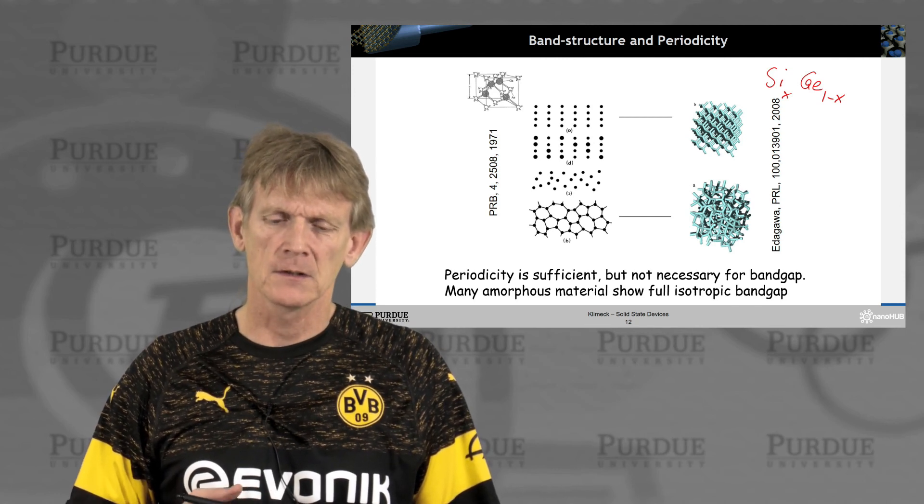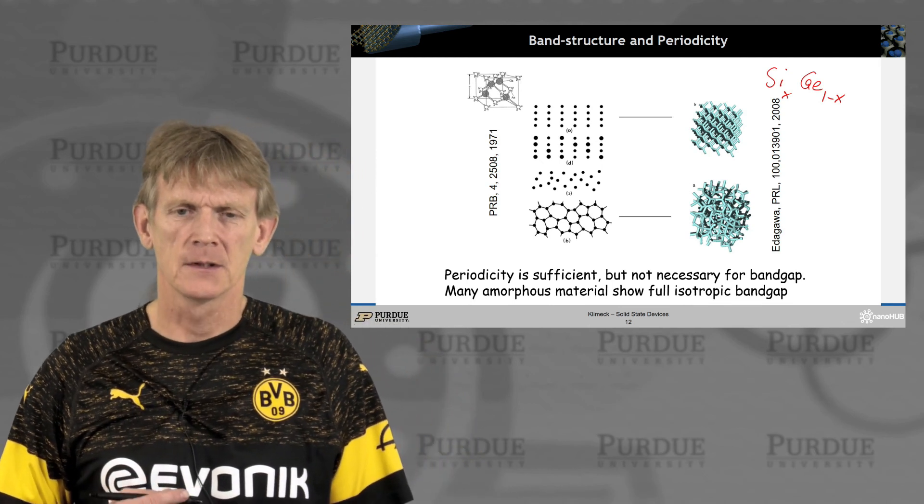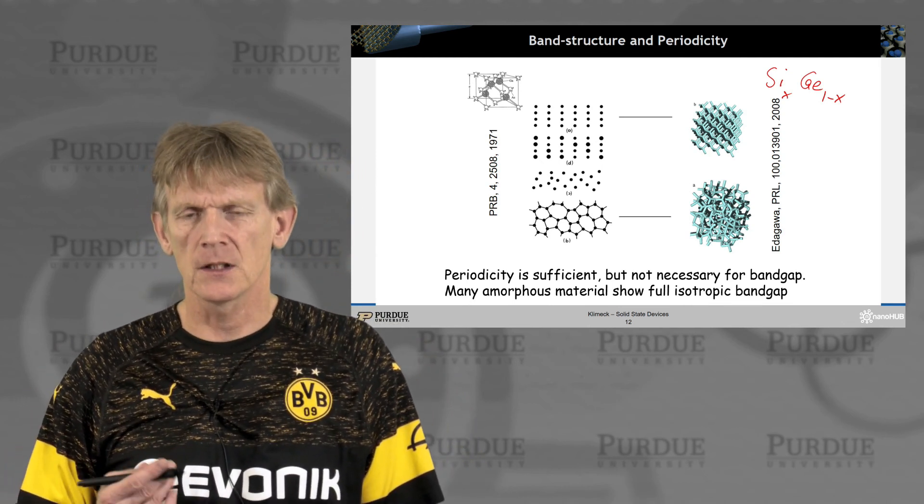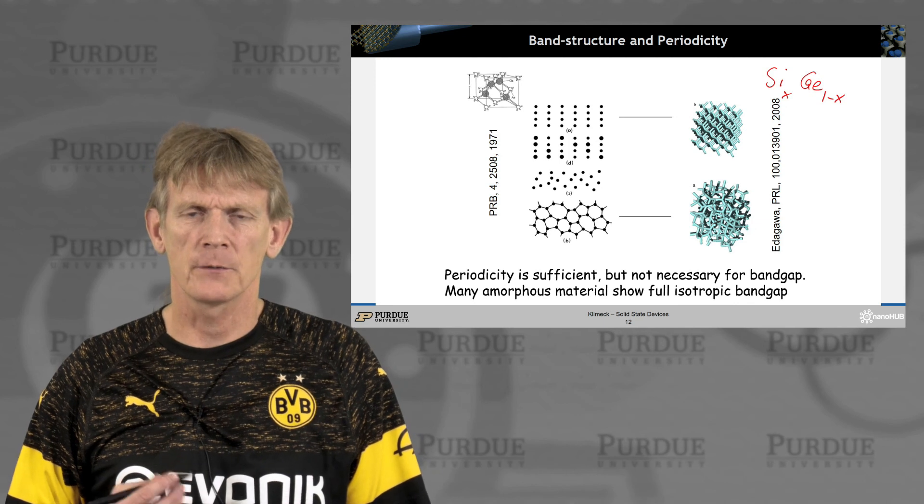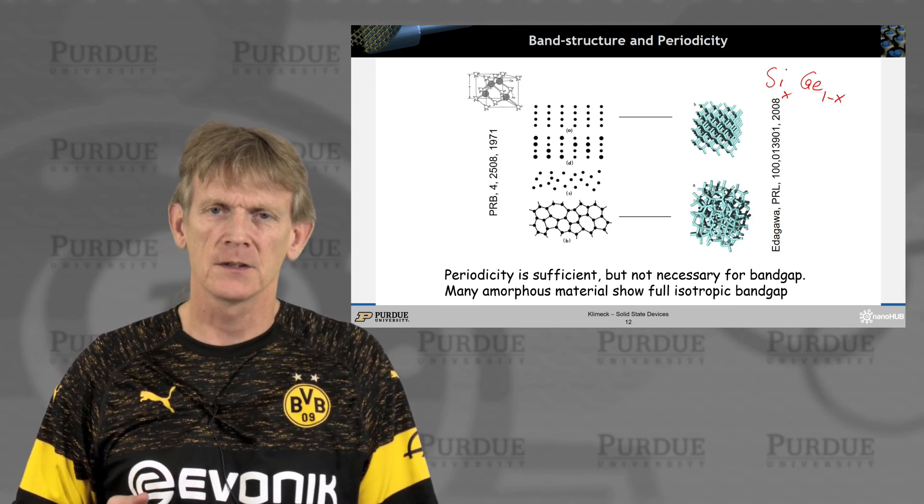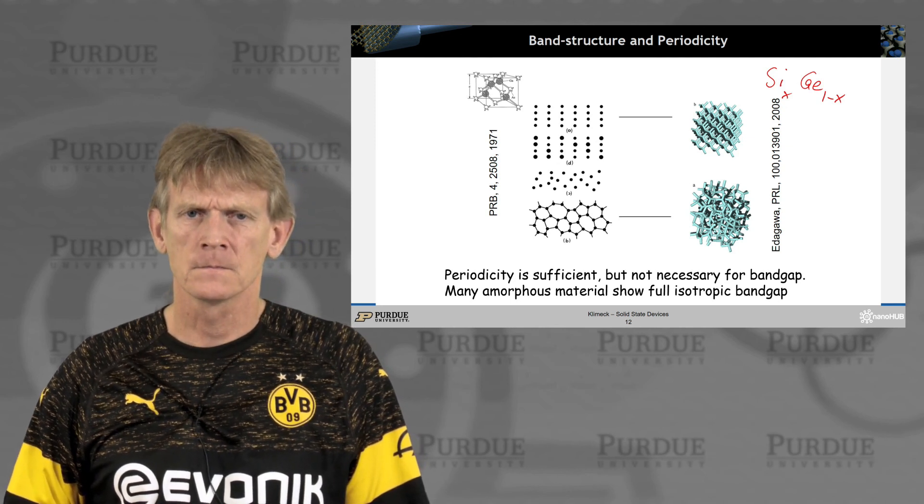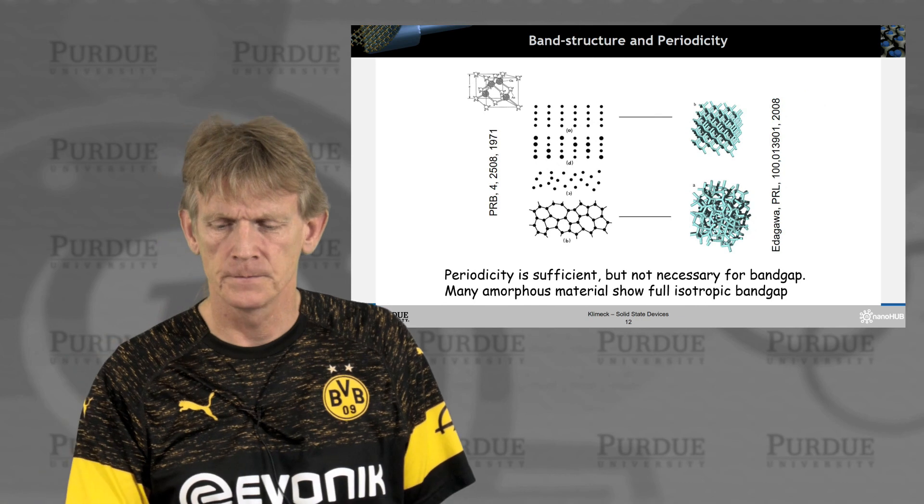And the question is, how large of a system do you need to make to have an average bandgap, etc. So these are interesting theoretical questions, but from a practical point of view, we know that there are amorphous systems that do have bandgaps.